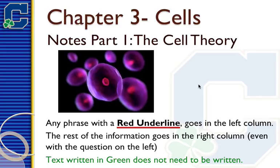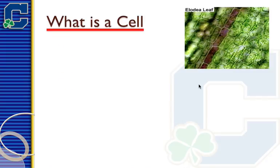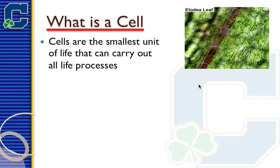Welcome to Unit 3. Unit 3, we're going to be talking about cells. This corresponds to chapter 7 in our textbook. Today we're going to be talking about what exactly cells are, what led to the discovery of cells, what was the big spark that finally led us to the discovery of cells, what's the cell theory, and then what are the major types of cells.